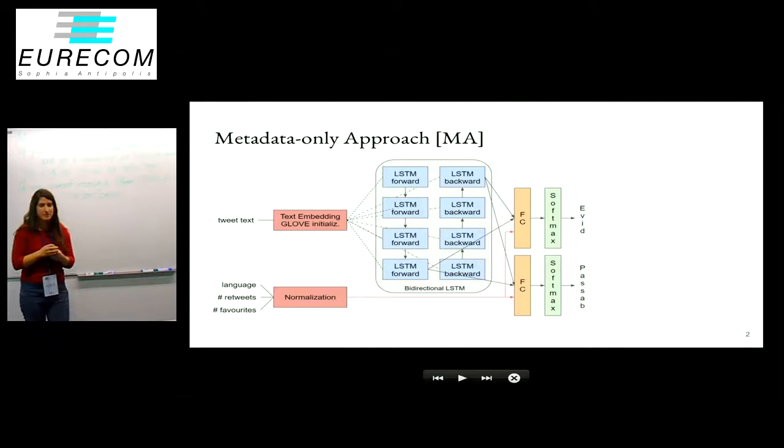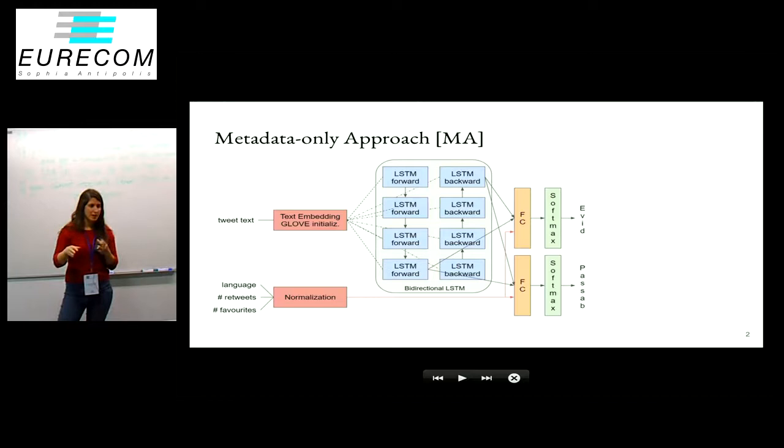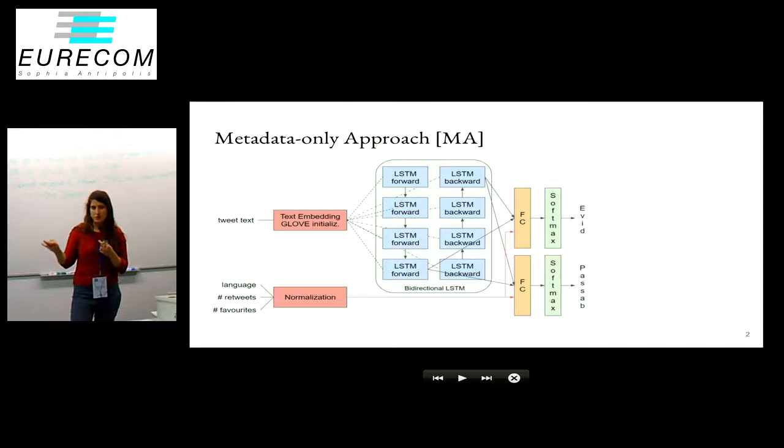We'll start with the metadata. For the metadata, the first thing we did—we had several fields from the Twitter API. We checked if there was any missing data, any fields that had like 70% of the data missing, and we skipped those. From the remaining ones, we looked if there was any correlation between each individual field and the evidence of flood or road possibility. We finally only kept the original language of the tweet, the number of retweets, and the number of times it was favorited.